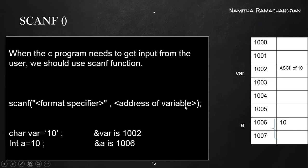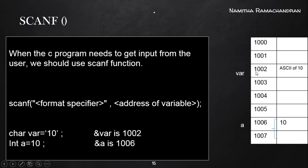To understand the program example, we need to understand the address of the variable. Here we have a variable declaration. The variable var is of type char and it stores the ASCII value of the digit 10. This variable var points to some memory location. The location has an address, for example 1002. Since var is a character type variable, it requires a single byte of memory.